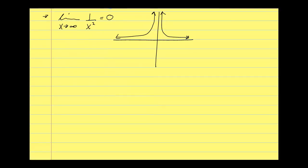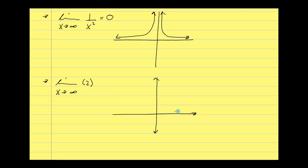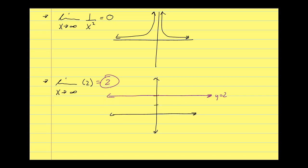This is always kind of a deceiving one — the limit as x approaches infinity of the constant 2. The constant 2: is that a vertical or horizontal graph? It's a horizontal graph, y equals 2. As x goes toward infinity, this is never changing, so my solution is 2. The limit of a constant is that constant.